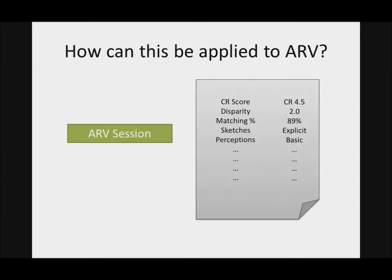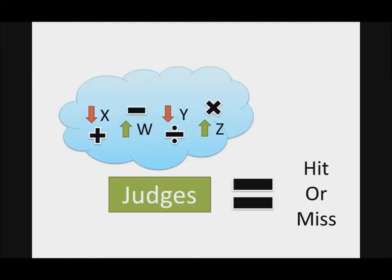Now in a typical ARV session, there are different attributes or different variables. There's the CR score order, the disparity, the maximum percentage, the sketches, and the different perceptions. And they by themselves don't necessarily mean that you're going to get a hit or a miss, but somehow all these variables come together and produce a hit or a miss. We just don't have this magical equation.